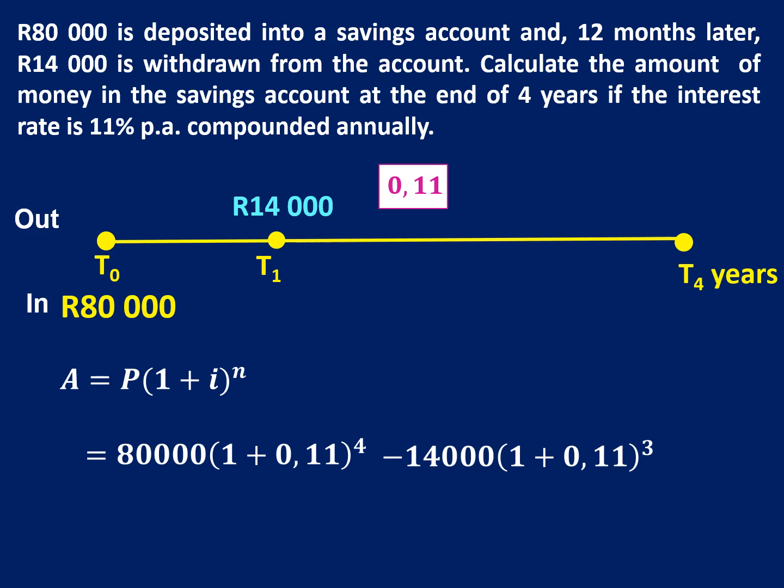Typing it into the calculator — and remember, we only want to use the calculator once — we end up with 102,298 Rand and 80 cents, rounded to two decimal places. So in financial maths, to be completely accurate, only use your calculator once. If money is going in or out of the account, always decide how much time is left on the timeline — that will be your exponent. Even though 14,000 Rand is coming out as a minus, it's losing interest for three years, which is why the exponent is three.